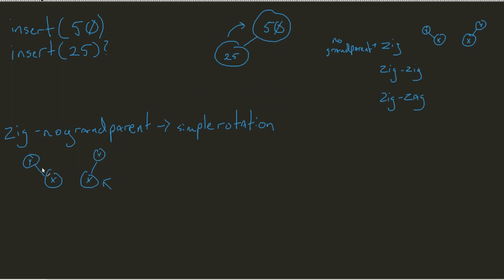X being the new parent and Y becoming the new child. So in our case, 25 is going to become the new parent and 50 is going to become the new child.